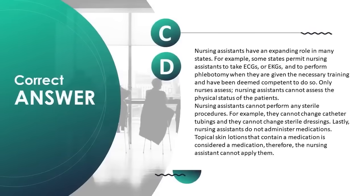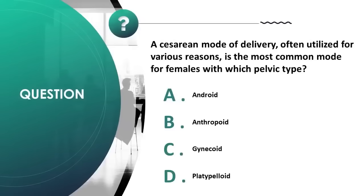Nursing assistants have an expanding role in many states. For example, some states permit them to take ECGs/EKGs and perform phlebotomy when given training and deemed competent. Only nurses assess — nursing assistants cannot assess physical status. Nursing assistants cannot perform any sterile procedures, such as changing catheter tubings or sterile dressings. Nursing assistants do not administer medications; topical skin lotions containing medication are considered medications.